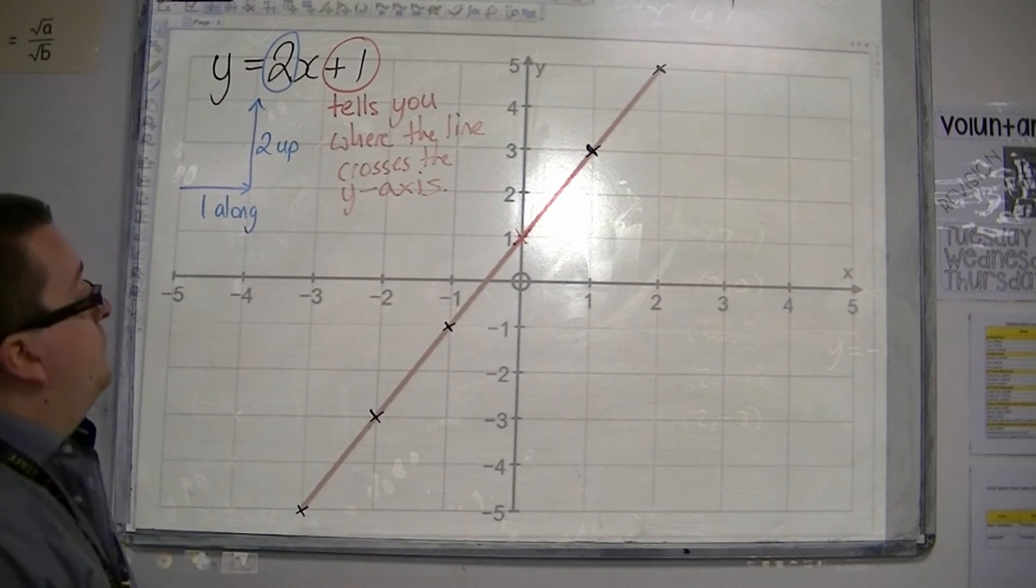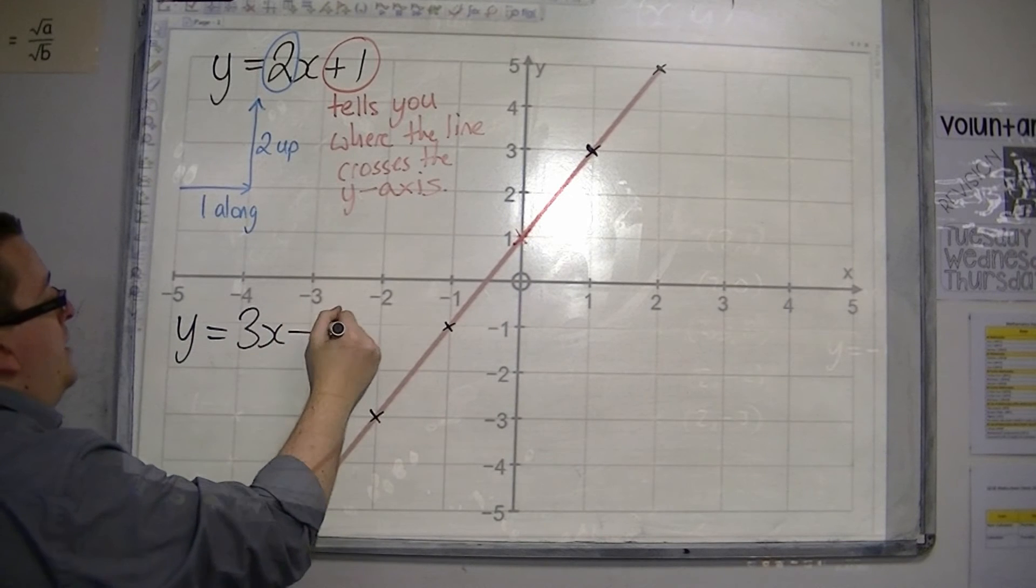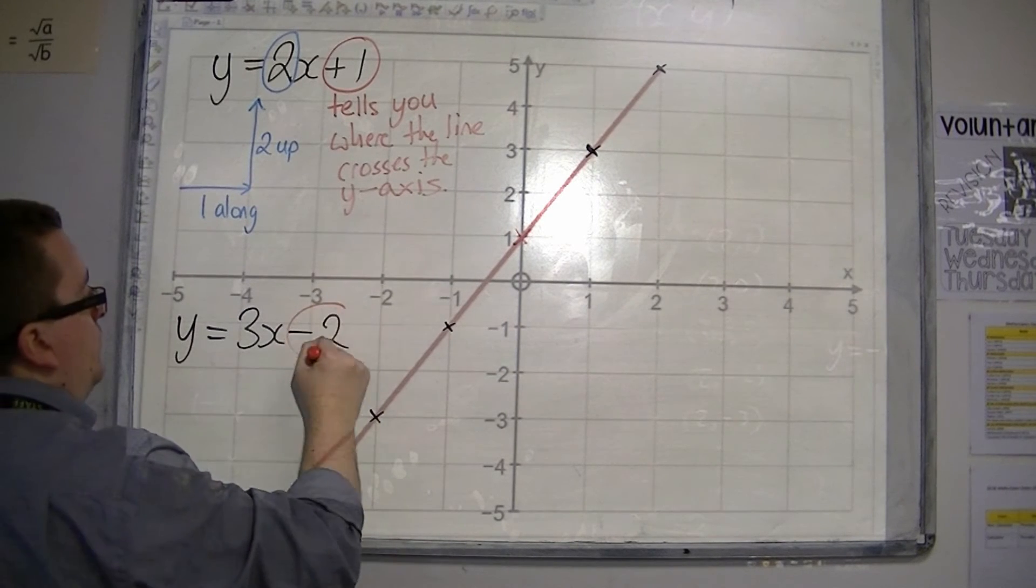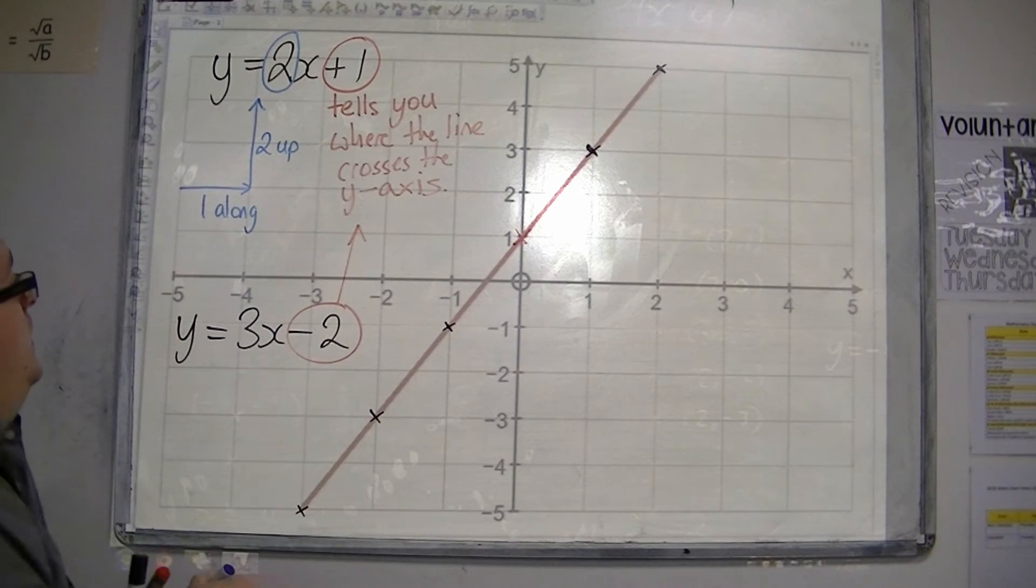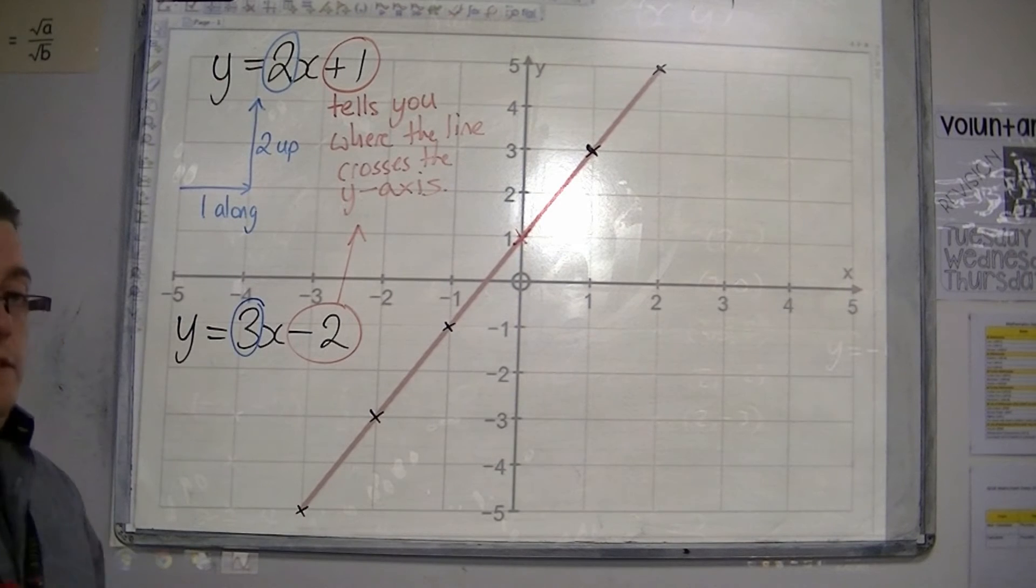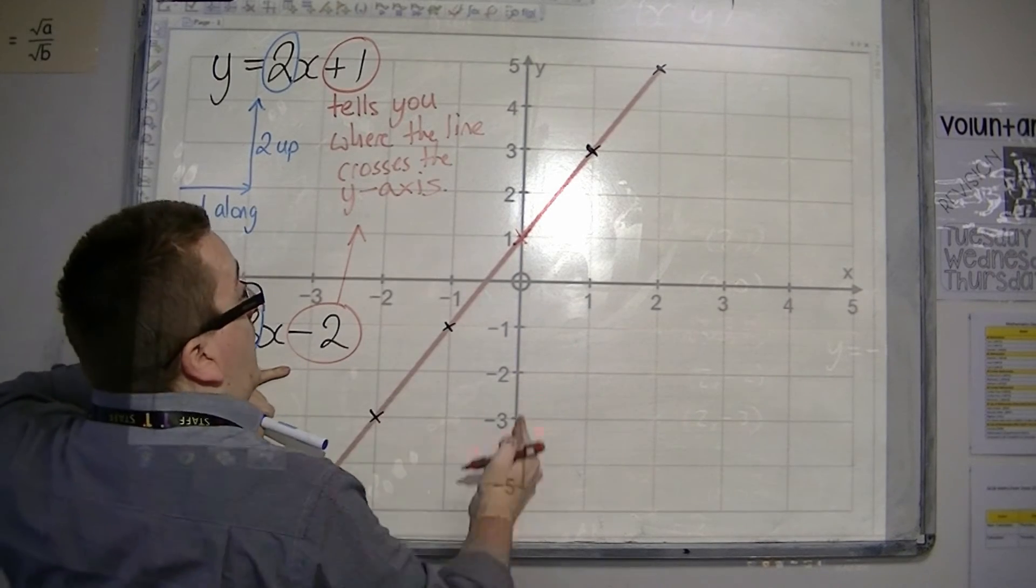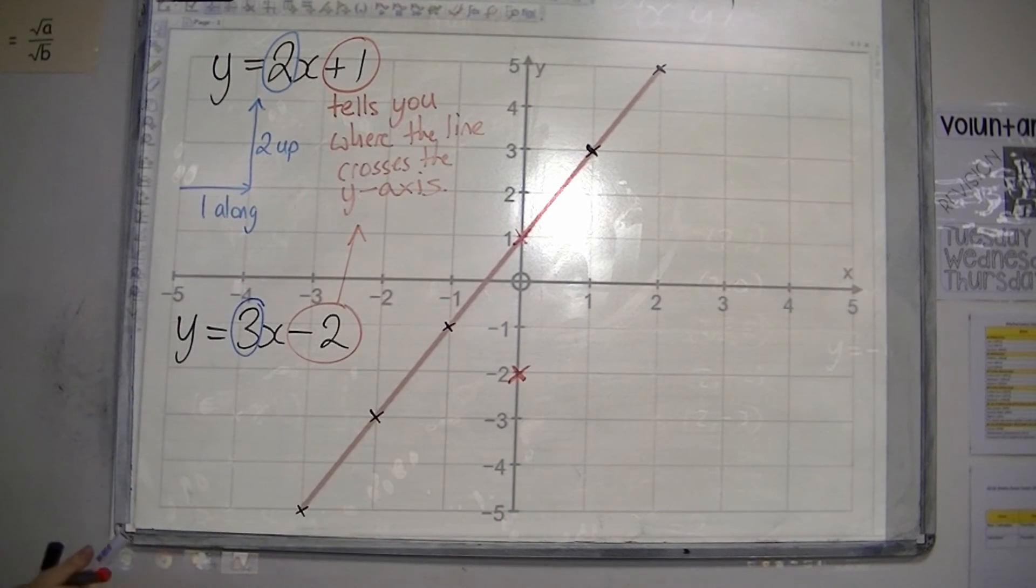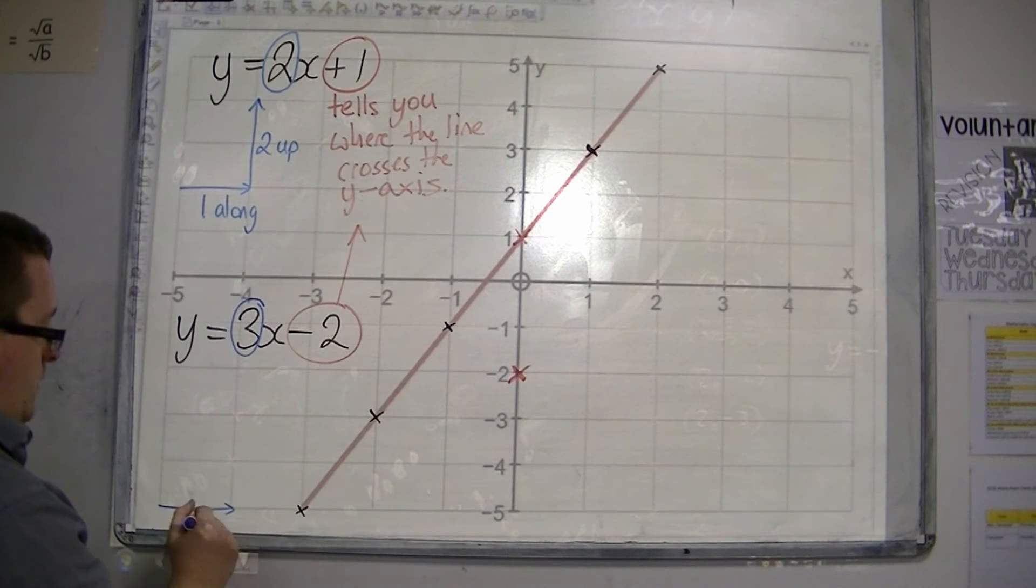So let's see another one. Let's look at the line y equals 3x minus 2. So in very much the same way, the minus 2 tells me where the line crosses the y-axis, and the 3 tells me the gradient. So if I'm crossing the y-axis at minus 2, I look for minus 2 on the y-axis, and it's there.